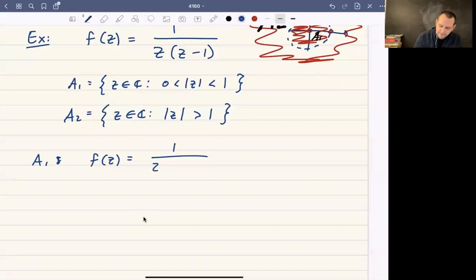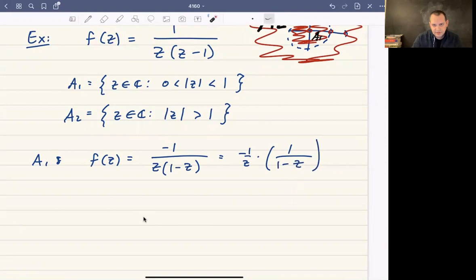I'm going to actually flip the denominator, so this will be 1 minus z, but I flip it at the cost of putting a negative up top. And then this is going to be negative 1 over z times 1 over 1 minus z. We need the modulus of z to be less than 1 in order for this geometric series to be defined. We need z not to be 0 so that 1 over z is defined. And then this is going to be equal to 1 over z times the sum from 0 to infinity of z to the n.